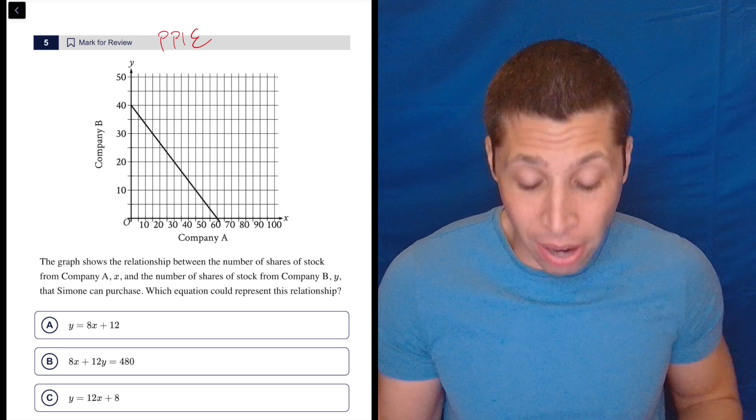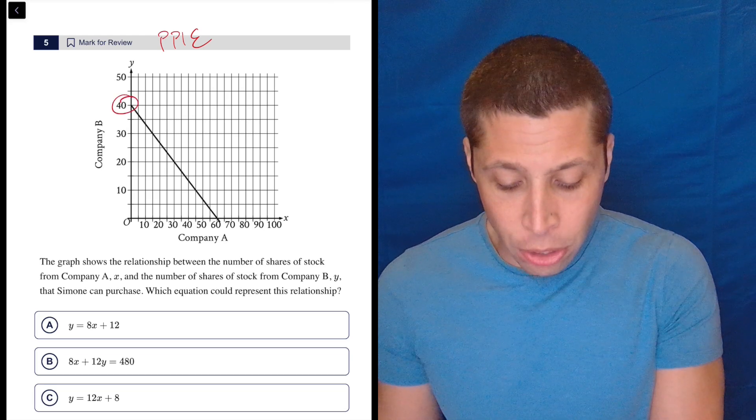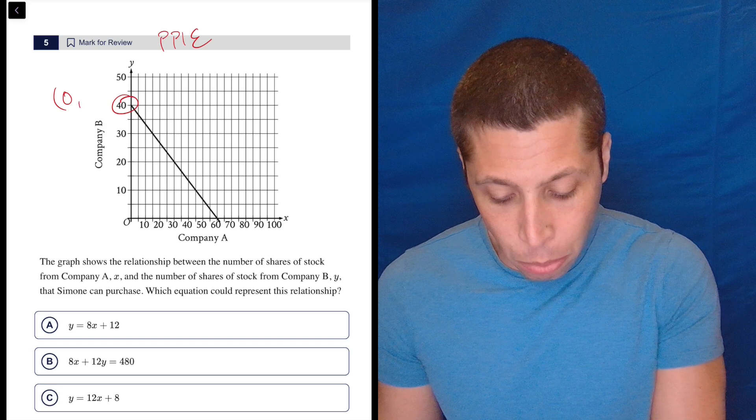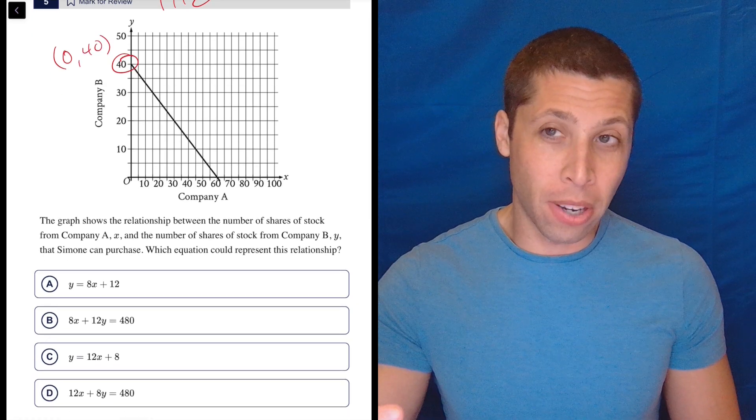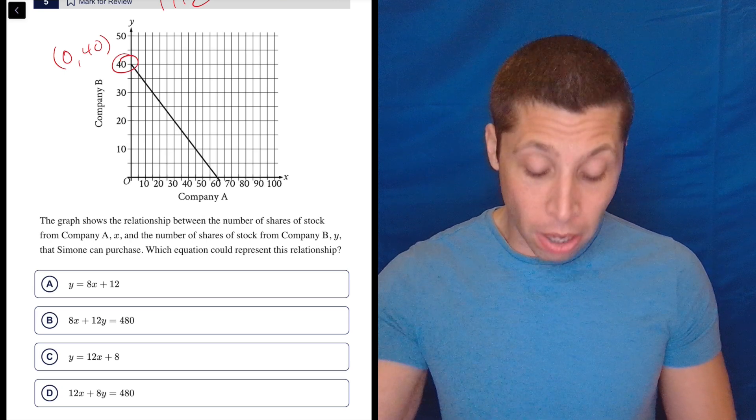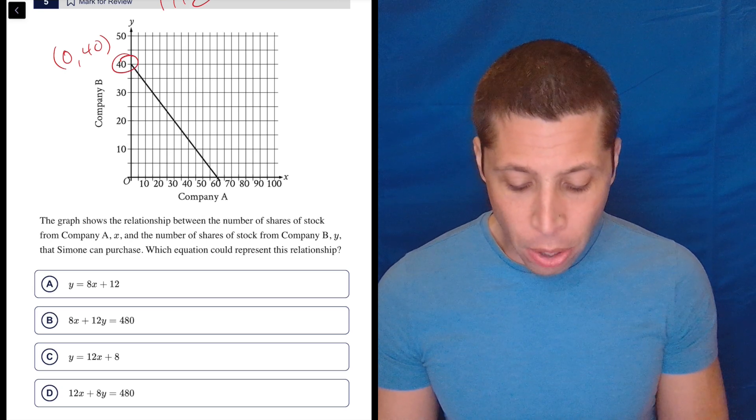It's just a line on a graph. And what's our favorite point? Our Y-intercept, because it's nice and easy, and it usually works out really well. So this is the point 0,40, so we're going to plug that in, and we can see that two of our answer choices work out extremely well because they're written in Y equals MX plus B format, and we know that the B...